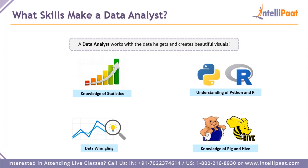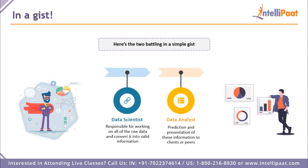Knowledge of big data technologies such as Pig and Hive is also needed. To summarize: a data scientist is responsible for working with all raw data and converting it into valid information. A data analyst performs predictions and presents that information to clients and peers. When a data scientist gives numbers to the data analyst, the analyst converts them into graphs, pie charts, and beautiful visuals — because part of a data analyst's job is to convince non-technical stakeholders about the data they've been working on.